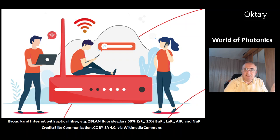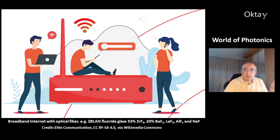One important compound for optical fiber is called ZBLAN — a fluoride glass composed of 53% zirconium fluoride, plus 20% barium fluoride, plus lanthanum fluoride, aluminum fluoride, and sodium fluoride.